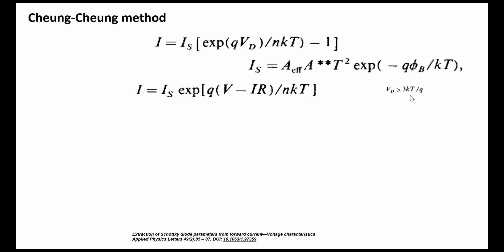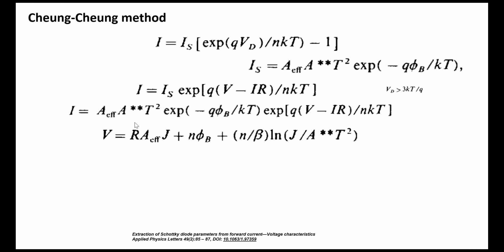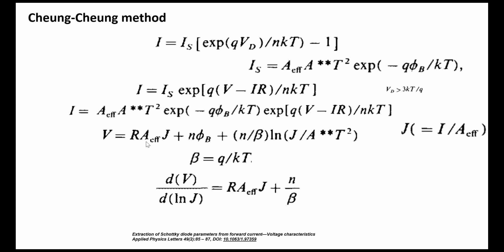In the Cheung method, the Is value is substituted and V and I terms are separated. Current density J = I/A_eff (effective cross-sectional area). We then find dV/d(ln J). If we plot dV/d(ln J) versus J, the slope gives the series resistance value, and the intercept gives the diode ideality factor. This is the Cheung method.